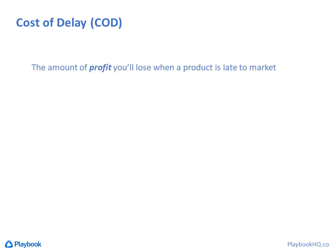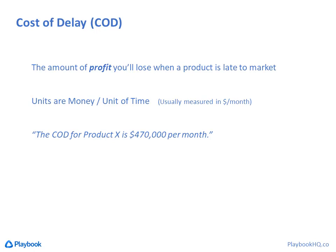So what is cost of delay? Very simply, it's the amount of profit you'll lose if you're late to market with your product. The units are in dollars — or your local currency — per unit of time. If the unit of time is not stated, it's usually one month. This number is unique for each product a company makes. For product X, you could say the cost of delay is $470,000 per month — and remember, this is profit, not revenue.